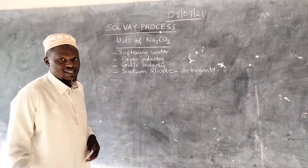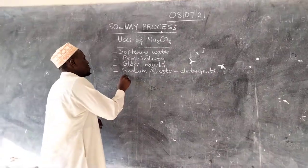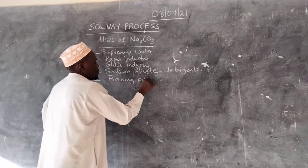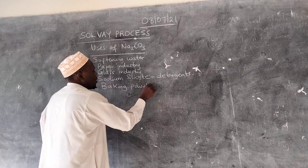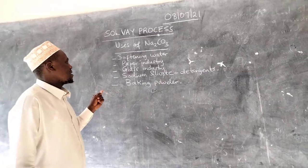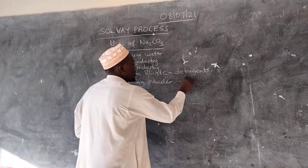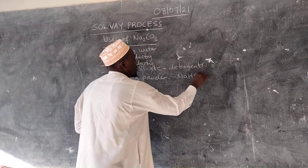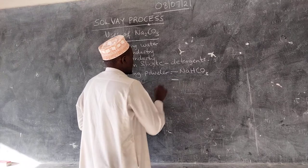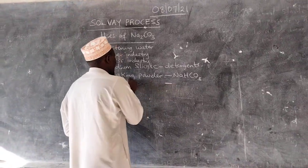Another use of sodium carbonate is in the manufacturing of baking powder, which is very common in houses. Apart from that, there is also sodium hydrogen carbonate. Sodium hydrogen carbonate is used to make baking powder and health drinks.